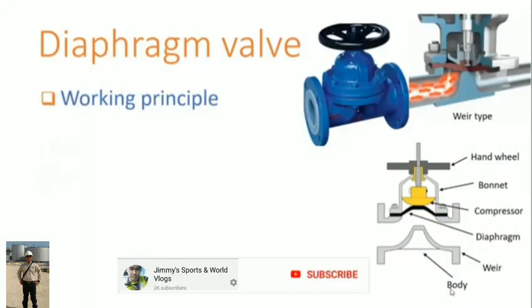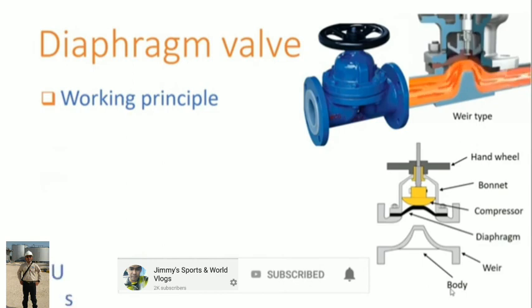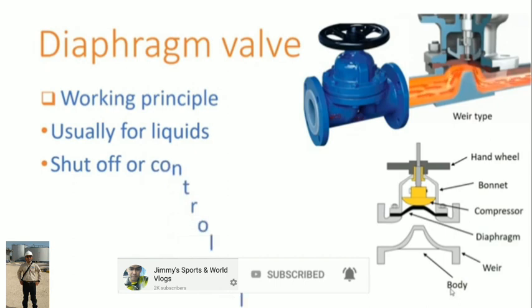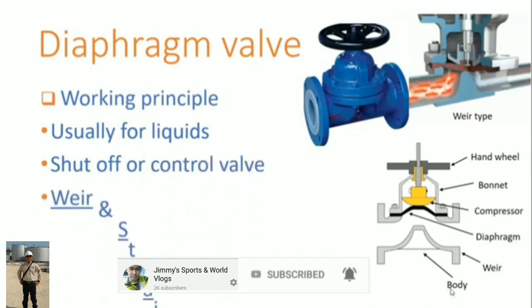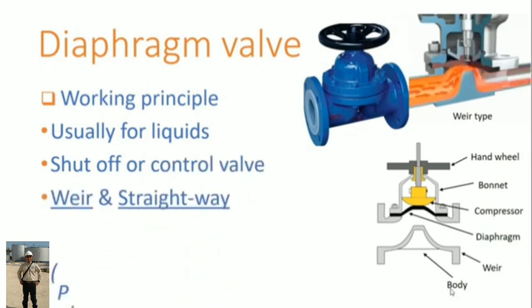Diaphragm valve working principles. It has a diaphragm moved by a compressor with the aid of a stem. Most of the time it uses for liquids, acting as both shut-off valve and control valve. There are two types called as weir and straightway. Most commonly seen is the weir type. The pinch valve is an improvement of the diaphragm valve working on the same principle.